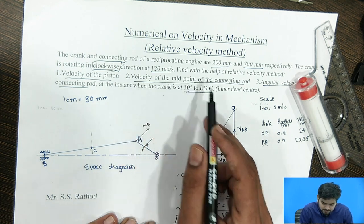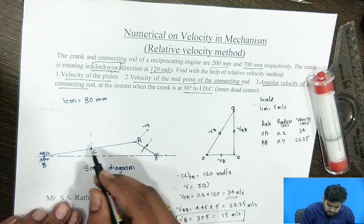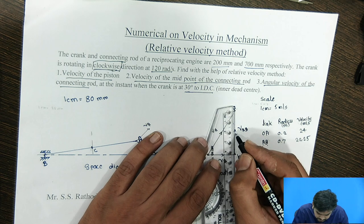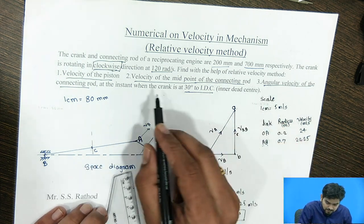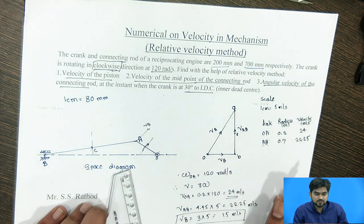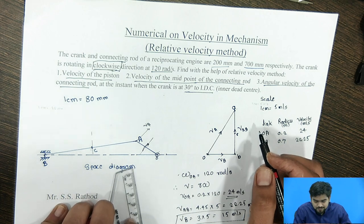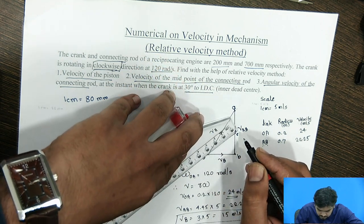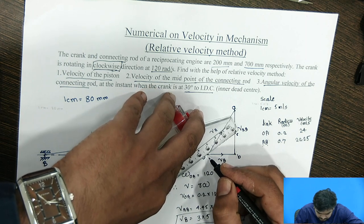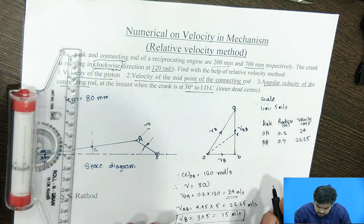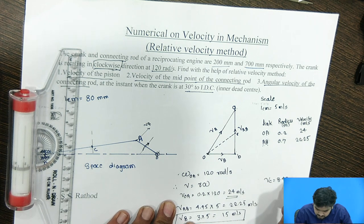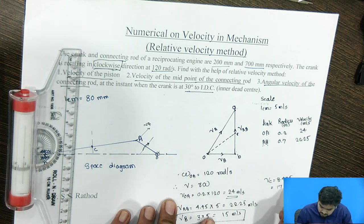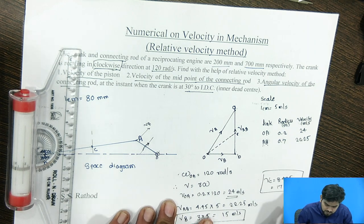Second, they asked to find the velocity of the midpoint of the connecting rod. C is the midpoint of the connecting rod AB. Similarly, find the midpoint of AB in the velocity diagram. To find the absolute velocity of C, join O to the C point. This length gives the velocity of C point, which is approximately 3.4 cm. Velocity of C = 3.4 × 5 = 17 meter per second. This gives us the velocity of the midpoint.